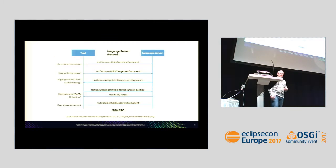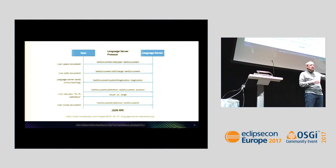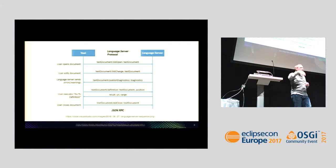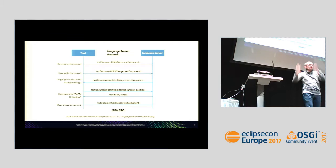The real knowledge about the language is captured in a separate process — for example, for JSON. The separate process running as the language server for JSON knows everything about JSON, can do everything with it, and delivers features to the client by communicating JSON messages back and forth. That sounds easy, and actually it is not that complicated — it's quite easy.